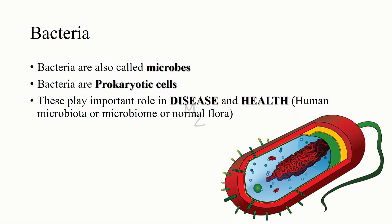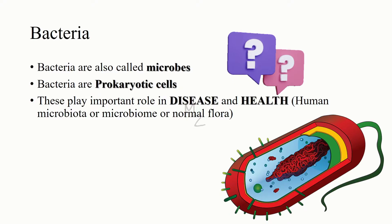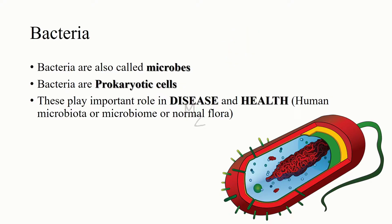Before talking about gram positive and gram negative bacteria in detail, we should know what bacteria are. The singular is bacterium and the plural is bacteria. Bacteria are also called microbes — tiny organisms that are visible only under the microscope. Bacteria are prokaryotic cells because they are unicellular. Bacteria play an important role in both disease and health, as they are an important part of the human microbiota, microbiome, or what we can also call normal flora.